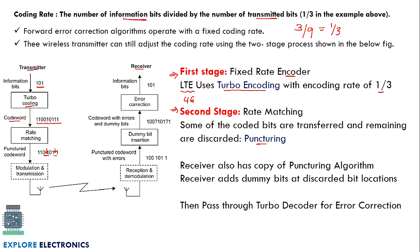The receiver receives this codeword and knows that two bits are missing, so dummy insertion happens — the codeword is regenerated by adding two dummy variables. There is an error correction module at the receiver that retrieves the information 101 correctly at the output. The receiver also has a puncturing algorithm to understand what method the transmitter used, adds dummy bits at the discarded bit locations, and passes through the turbo decoder to get the information back.